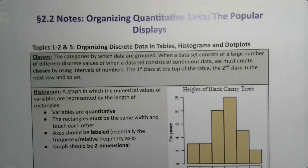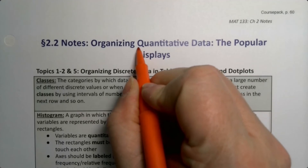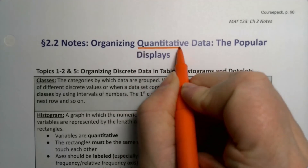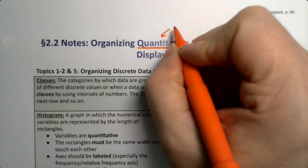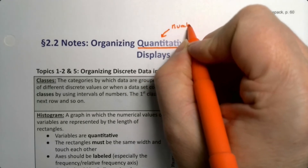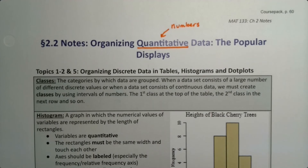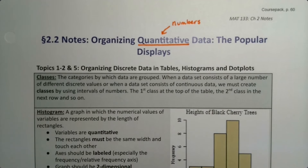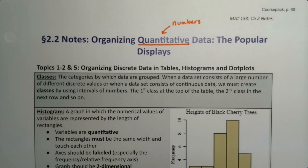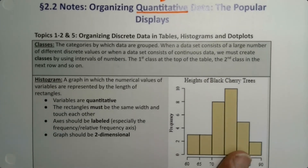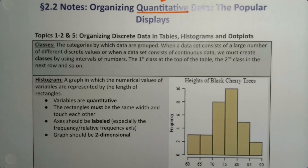In section 2.2 we're going to work with organizing quantitative data. We've been working with qualitative data in the previous section, so in this section we're going to work with numbers — particularly numbers you could perform meaningful calculations from. They're not numbers that are just labels like your social security number. We're going to organize discrete data in tables, histograms, and dot plots, so we have to talk about a few definitions.